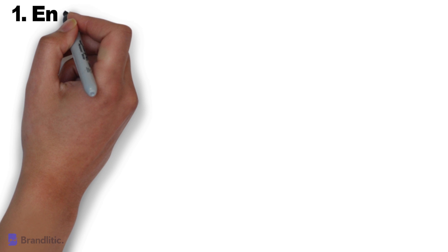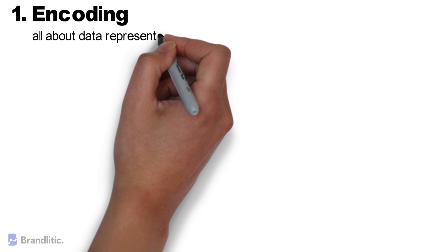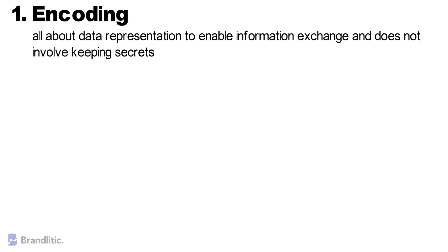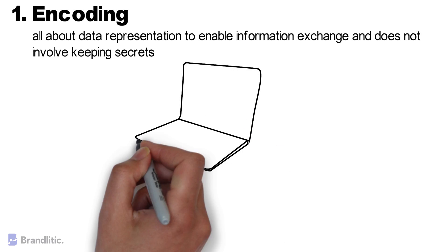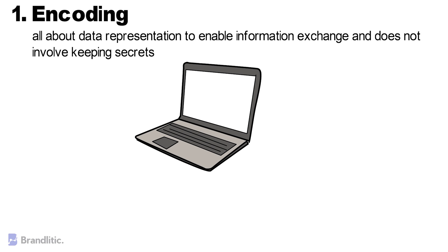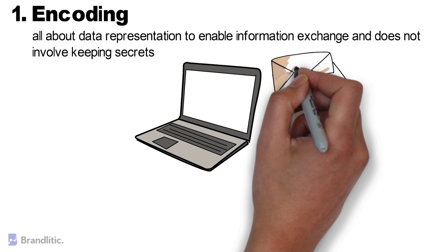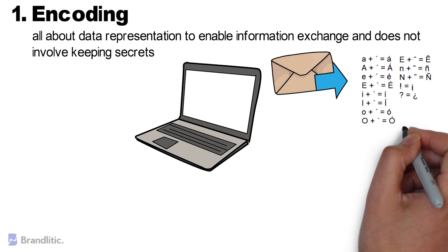Encoding. In a nutshell, encoding is all about data representation to enable information exchange and does not involve keeping secrets. The purpose of encoding is to transform data so that it can be properly and safely consumed by a different type of system — for example, binary data being sent over email or viewing special characters on a webpage.